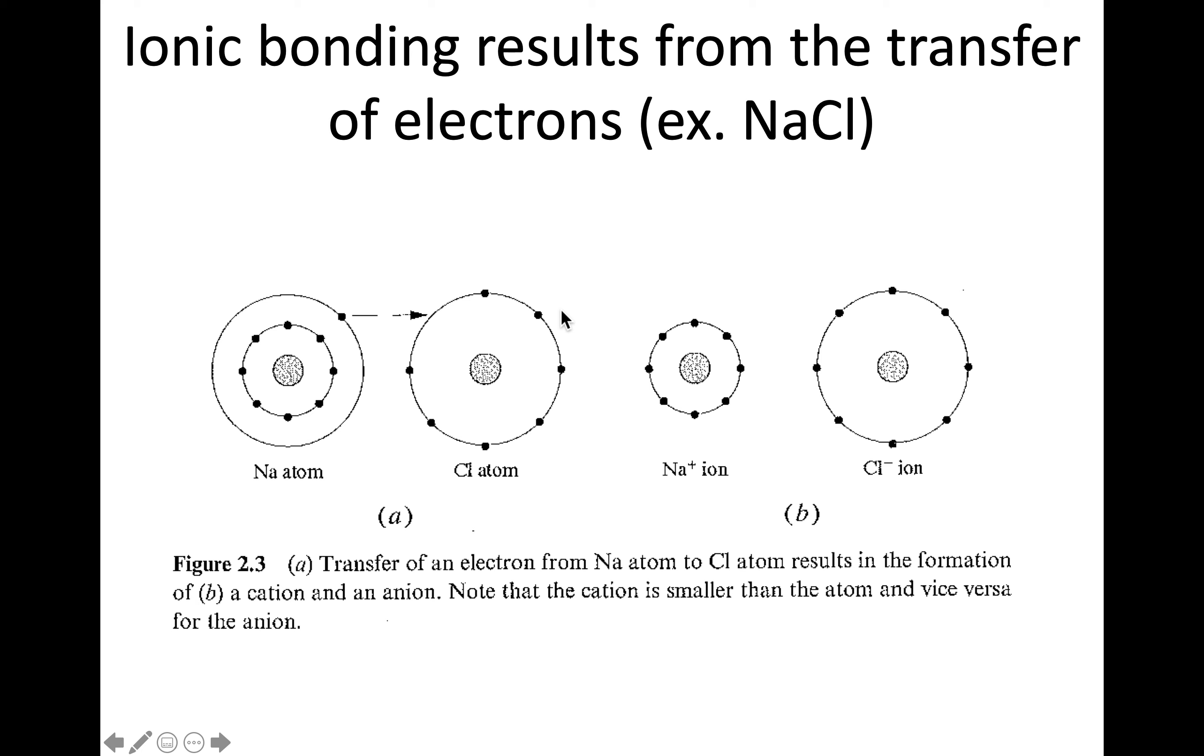So, briefly, just the basics of ionic bonding that you're probably familiar with. We're talking about a type of bonding that is the result of a transfer of electrons. So sodium chloride is the typical example given for ionic bonding. So we start with the atoms, the elements of sodium and chlorine.